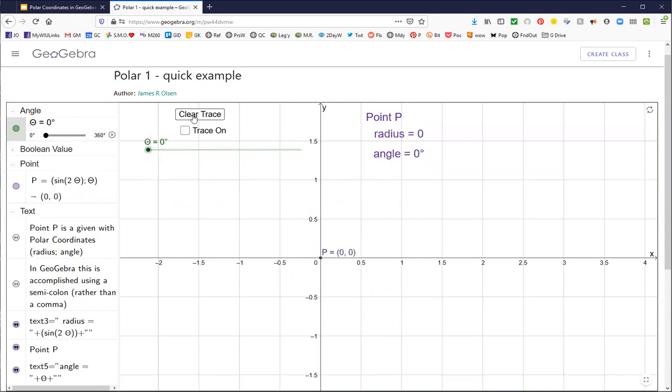I'm going to turn on the trace, and this will trace the points and trace out the curve for us. So let me get the trace turned on here. There we go. So here's some small angles, and here we come up to 90 degrees. The radius gets small, then the radius turns negative.